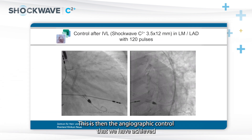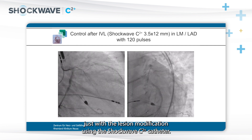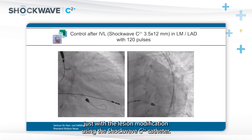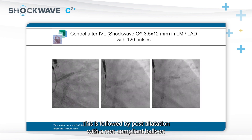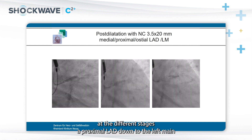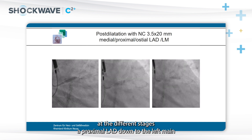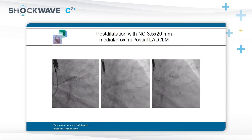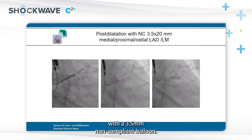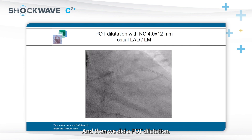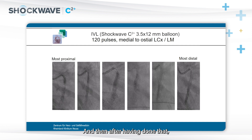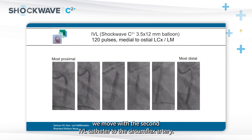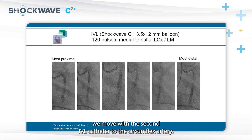This is the angiographic control achieved just with lesion modification using the C2-plus catheter. This is followed by post-dilatation with a non-compliant balloon at different stages — at proximal LAD down to the left main with a 3.5 mm non-compliant balloon — and then a POT dilatation. After that, we move with the second IVL catheter to the circumflex artery.